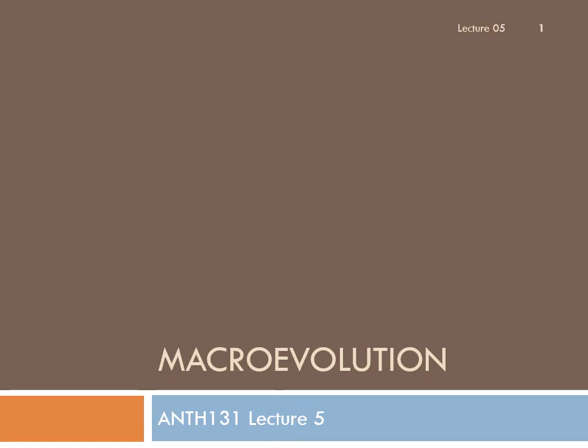We'll start the next portion of the course looking at macroevolution — the evolutionary processes that create new species from their ancestors, and more specifically, how we recognize which species are related to which. This lecture will also look briefly at humans' mammal relatives, and chapters 6 and 7 will be devoted to primates. Since we're studying macroevolution, we really need to understand the species concept and how species can be identified and described.